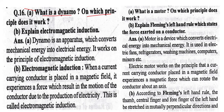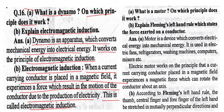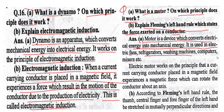What is a dynamo? A dynamo converts mechanical energy into electrical energy and works on the principle of electromagnetic induction. Electromagnetic induction: when a current-carrying conductor is placed in a magnetic field, it experiences a force causing motion of the conductor and production of electricity. A motor converts electrical energy into mechanical energy; it is used in electric fans, radiators, washing machines, computers, and mixers. An electric motor works on the principle that a current-carrying conductor in a magnetic field experiences a force that can rotate it about an axis.